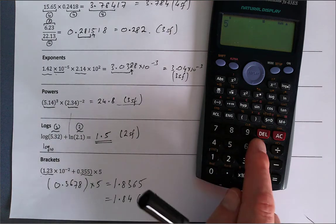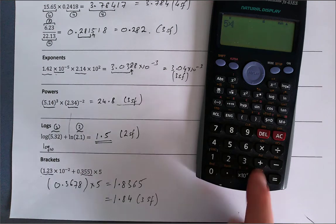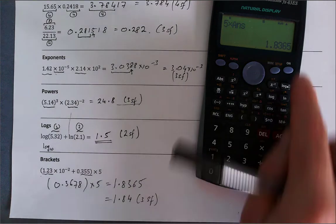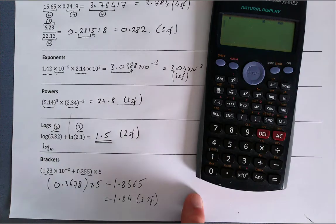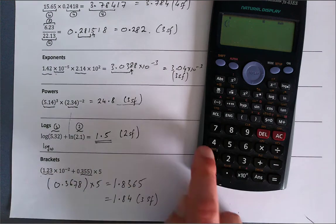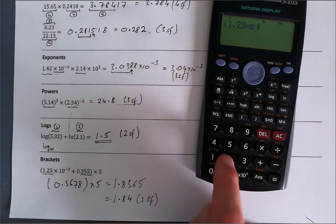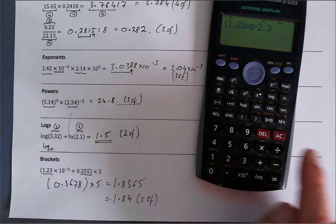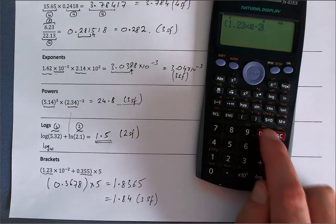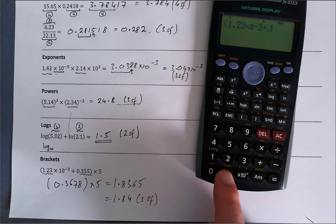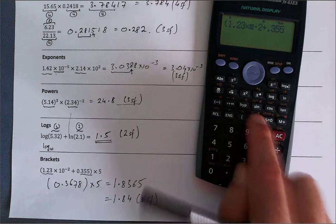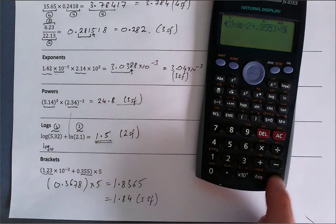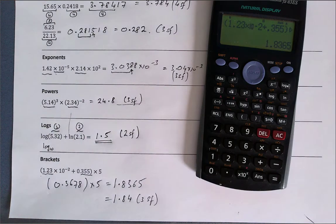Or I can use the bracket functions on the calculator. I can say open bracket, 1.23 times 10 to the minus two, plus 0.355—oops, mistake here—so I can use the delete button. Plus 0.355, close bracket. Okay, this is the first bit of the calculation, and then I'm going to multiply the whole lot by five, and I get the same answer.